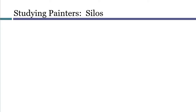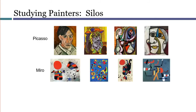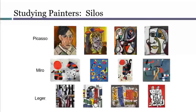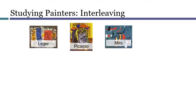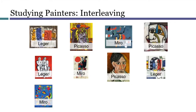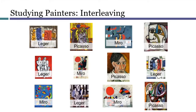Let me describe some of the laboratory research that demonstrates this. One experiment evaluated two different ways of teaching students how to recognize art created by different 20th-century painters. Two groups of students were shown the same material but in different orders. The first group was taught about painters in silos — one unit was all Picasso, another all Miro, another all Leger. Another approach involved what education researchers call interleaving: the students saw the works of the painters on more than one occasion, the painter-by-painter silos were broken apart, and the works were interleaved with each other.